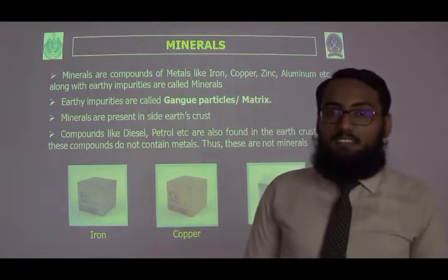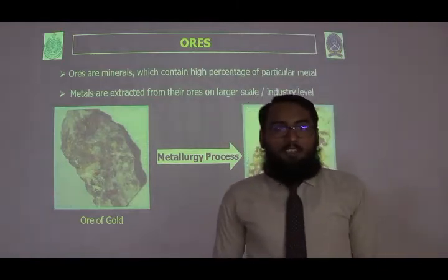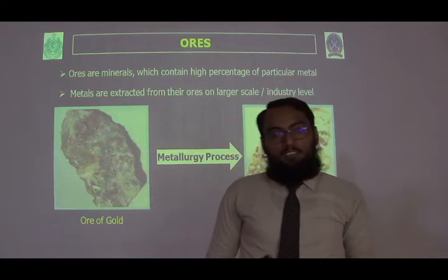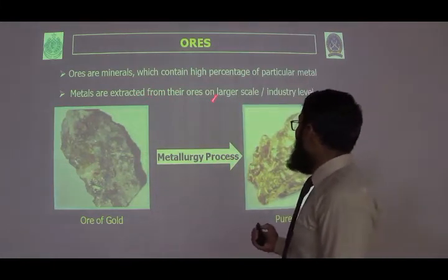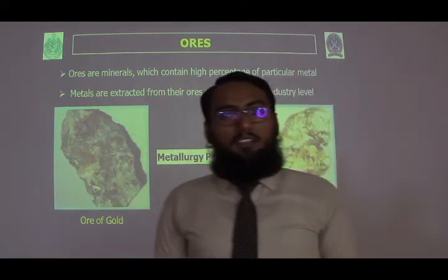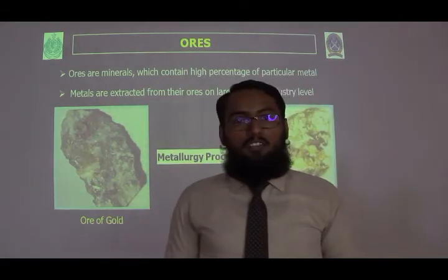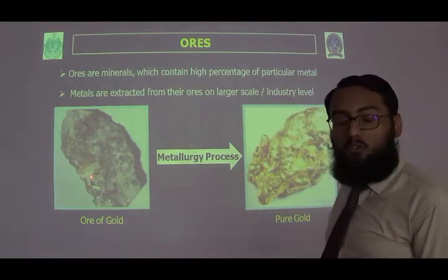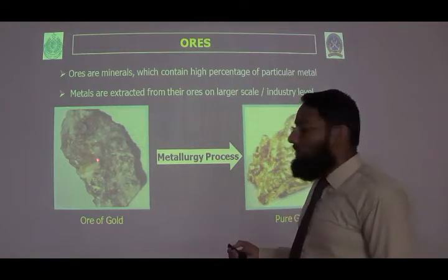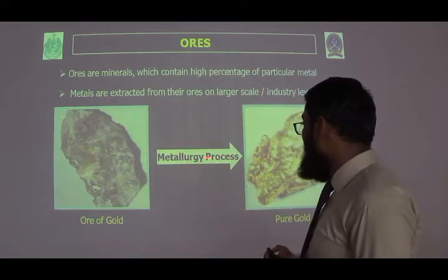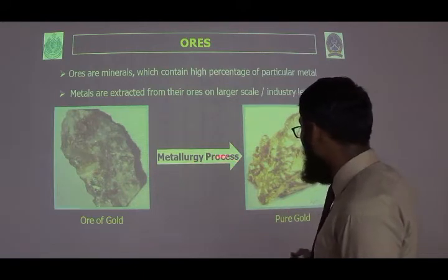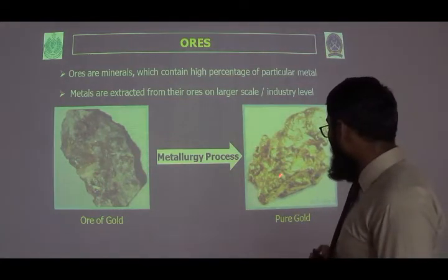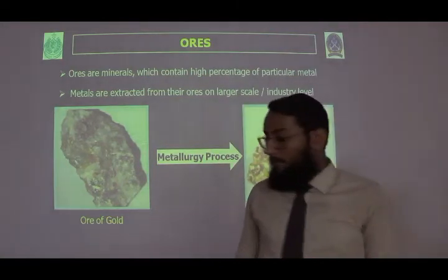Then we will talk about ore. Ores are minerals which contain a high percentage of metals. Metals are extracted from ores on an economical, large-scale industrial level. For example, gold ore contains a gold compound along with some other impurities known as gang particles or matrix. After the metallurgy process, the product is pure gold — impurities are removed through metallurgy.